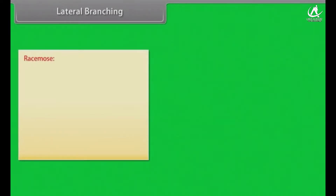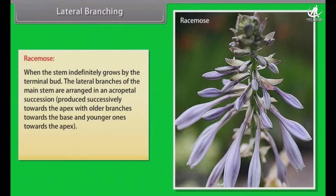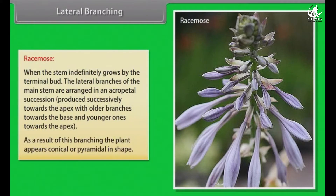In racemose branching, the stem indefinitely grows by the terminal bud. The lateral branches of the main stem are arranged in an acropetal succession, produced successively towards the apex, with the older branches towards the base and younger ones towards the apex. As a result of this branching, the plant appears conical or pyramidal in shape.